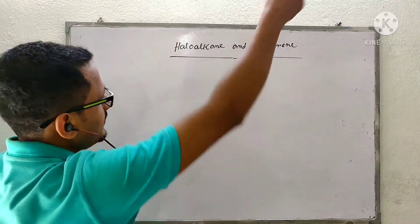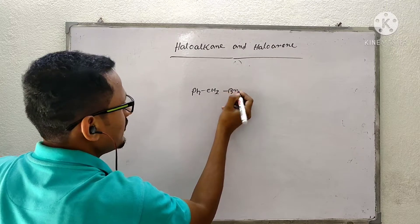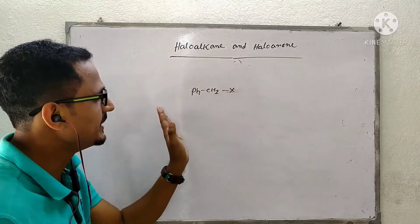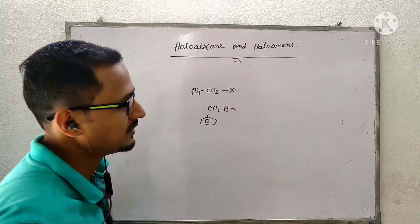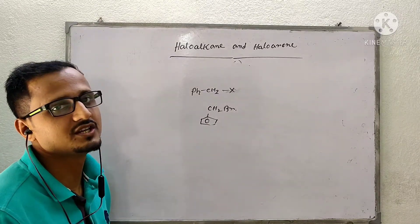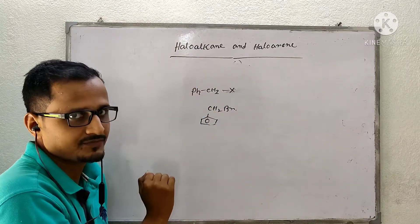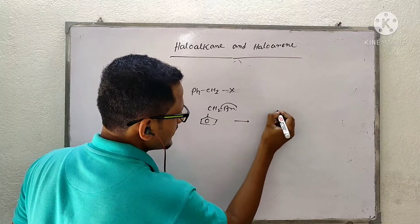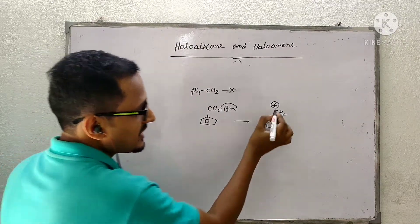For the order of participation in SN1 reaction, consider the compound PhCH₂Br — benzyl halide, meaning benzene with a CH₂Br group. This compound will participate very readily in SN1 reaction after tertiary haloalkanes, because the benzyl carbocation formed after releasing bromine is resonance-stabilized.